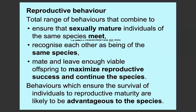Reproductive behaviour is the total range of behaviours that combine to ensure that sexually mature individuals of the same species meet, recognise each other as being of the same species, mate, and leave enough viable offspring to maximise reproductive success and continue the species.